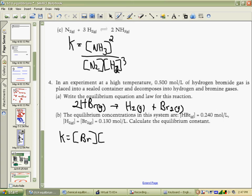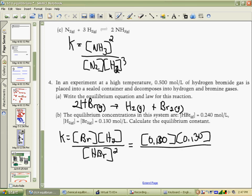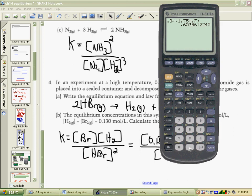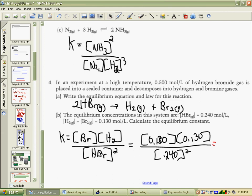Now we need to write our equilibrium law for this. We know that the concentration of bromine times the concentration of hydrogen divided by the concentration of hydrogen bromide squared will give us our answer. Our concentrations of bromine and hydrogen are each 0.130, and our concentration of hydrogen bromide is given as 0.24, and we square that, run to our calculator, and we want 0.13 squared over 0.24 squared gives us 0.293 approximately, would be our value for K.